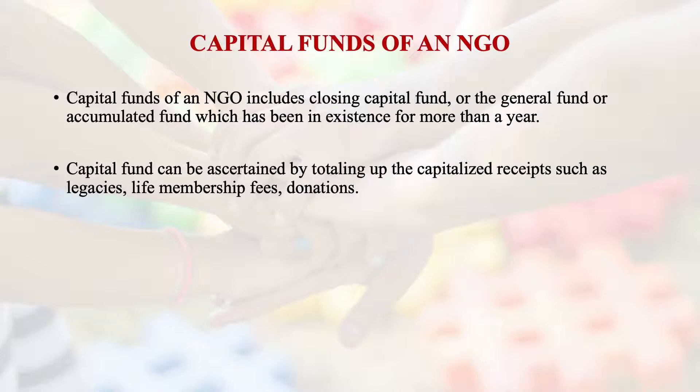The funds can be assessed by totaling up the capitalized receipts such as legacies, life membership fees, and donations. There are different forms of funds coming into the NGO which have to be bifurcated under certain heads, totaled, and used as the closing capital fund. If there is a surplus, that means there is an excess of income over expenditure.